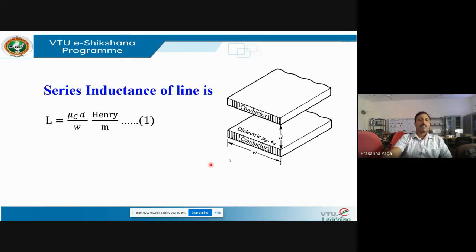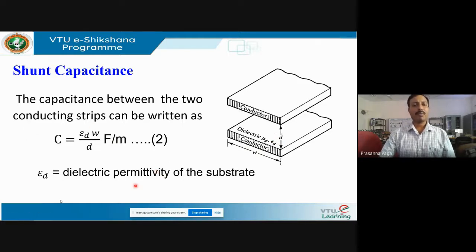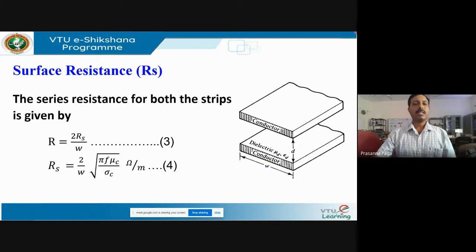The series inductance is given by L = μ_c · d/w, expressed in henries per meter, where μ_c is the permeability of the conducting material and d is the distance of separation. Inductance is inversely proportional to width and directly proportional to separation distance. The capacitance between the two plates is C = ε_d · w/d, expressed in farads per meter, where ε_d is the permittivity of the substrate.